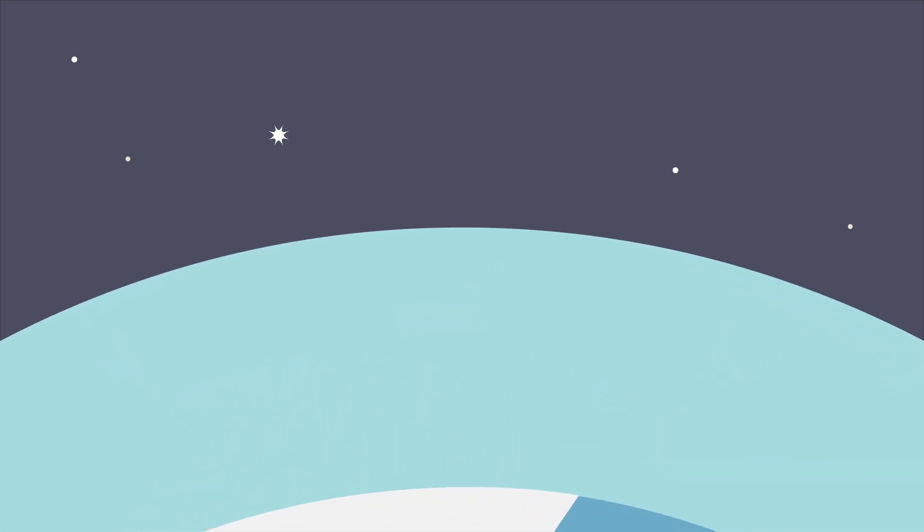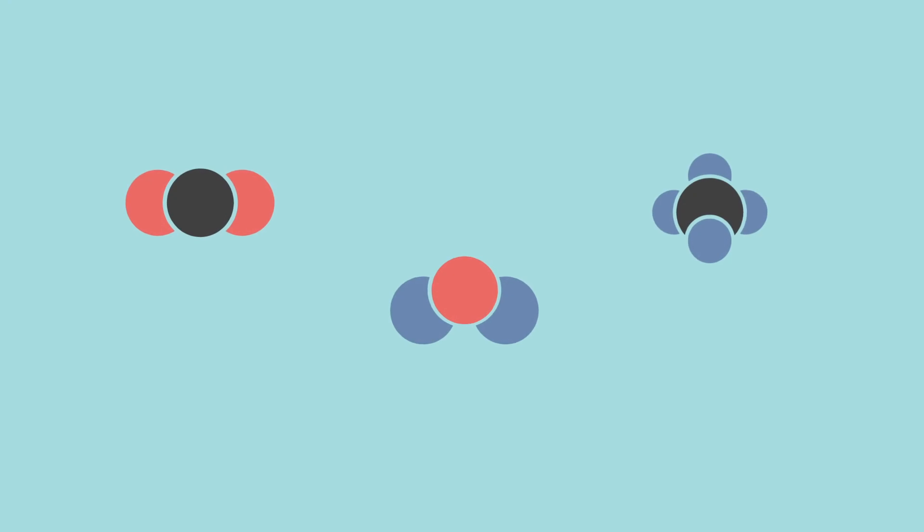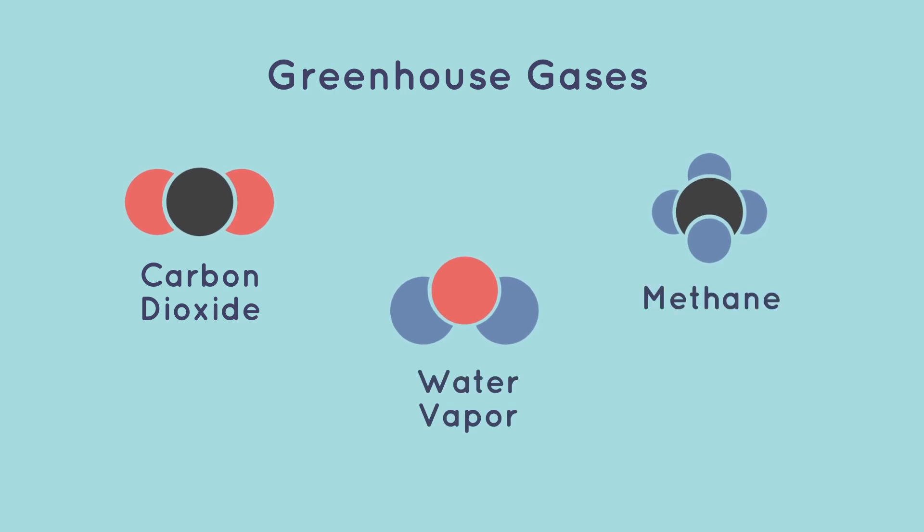But some of that heat is trapped by the gases in the atmosphere. These heat-trapping gases are called greenhouse gases. Carbon dioxide, water vapor, and methane are all examples of greenhouse gases.